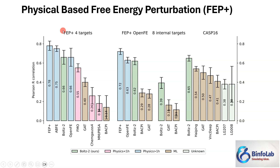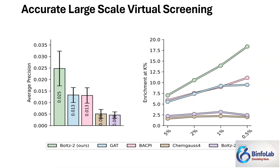BOLDS-2 is also able to handle physics-based free energy perturbations, what we call FEP. Different targets were used to check this, and BOLDS-2 was marginally or in some places completely outstanding, while in other places it was comparable with other programs. BOLDS-2 can also be used for virtual screening — large-scale virtual screening — and this shows their efficiency or average precision analysis.